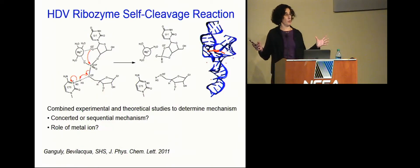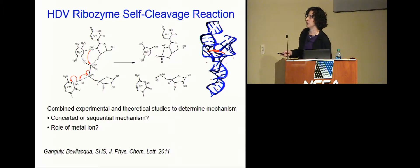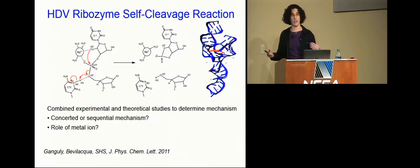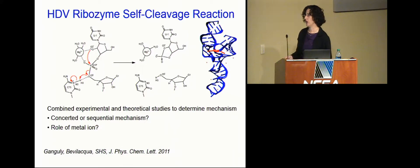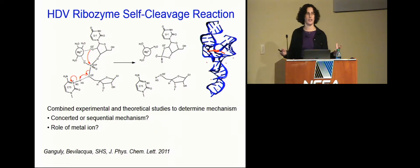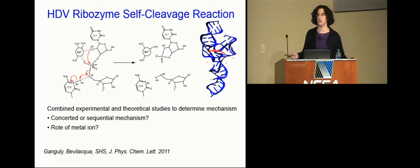The particular ribozyme we're studying today is HDV — hepatitis delta virus. It self-cleaves in the same way: an oxygen forms a bond with a phosphorus and breaks another bond. We work very closely with an experimental group, Phil Bevilacqua at Penn State, in a fruitful collaboration. They give us data, we try to explain it, then we make predictions and they test it. If you're going to do all these very complex and expensive computer simulations, it's very nice to be able to connect it to reality.